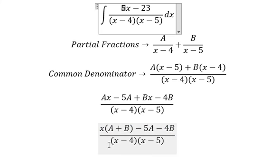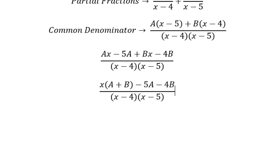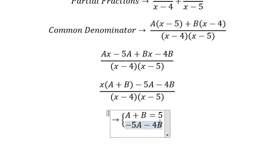Now if we look carefully about coefficient of x, we get number 5. That means A plus B equals to 5. This one should be negative 5A negative 4B equals to negative 23.